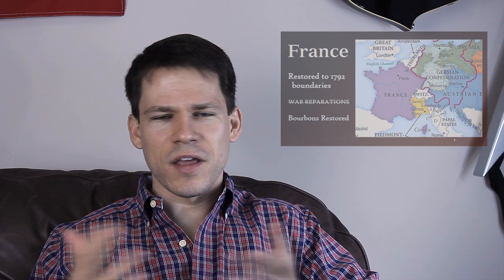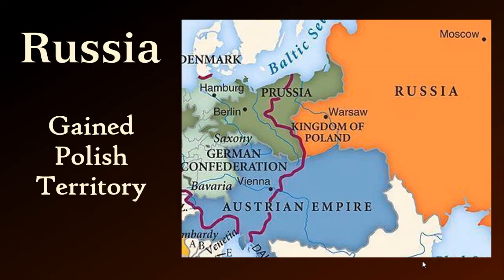No war reparations, and the Bourbons are restored — Louis XVIII. France is going to be recreated in its old image. Russia gained some territory in Poland, which had previously been partitioned between Austria, Prussia, and Russia. Russia had been instrumental in Napoleon's defeat — Napoleon brought his grand army into Russia with 500,000 people and came back with about 10,000. So Russia needs to be rewarded. Alexander I of Russia was very influential at this conference, and the defeat of Napoleon in Russia is glorified in novels such as War and Peace.